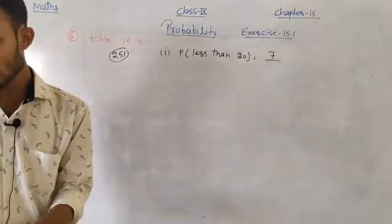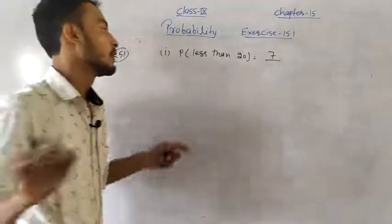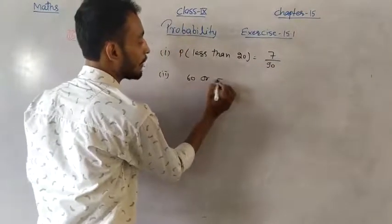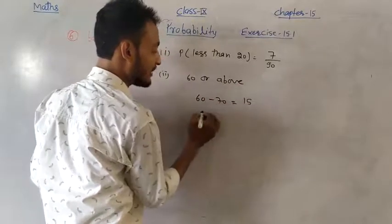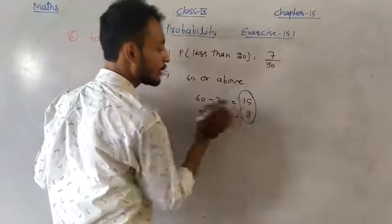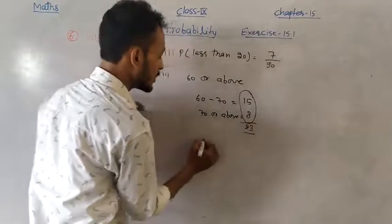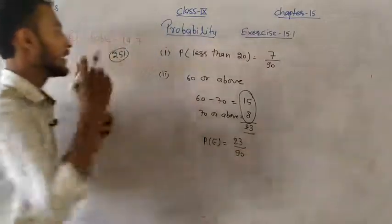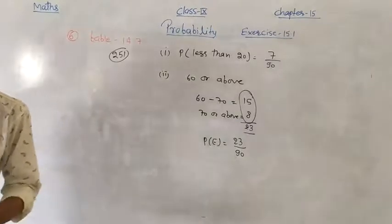Second part of Question 6: Find the probability that a student obtained 60 marks and above. From the table, students scoring 60–70 = 15 and 70 and above = 8. Total = 23. So probability = 23/90. That completes Question 6.